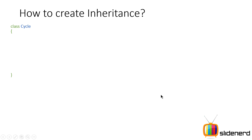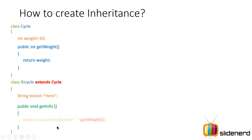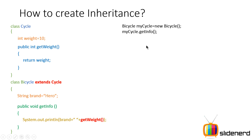Let's look at this at a closer angle. Class Cycle has weight equal to 10, and a method int getWeight that returns the value of weight. Then class Bicycle extends Cycle — meaning Bicycle is a special version of Cycle with weight and getWeight already copied in. In addition, Bicycle adds String brand equals 'hero' and a public void getInfo method that calls System.out.println with brand and getWeight — even though getWeight is not defined inside Bicycle itself.